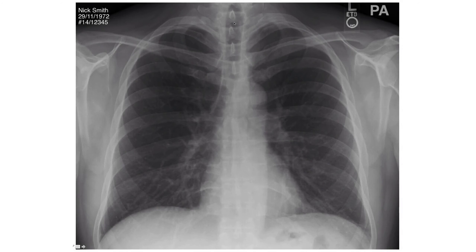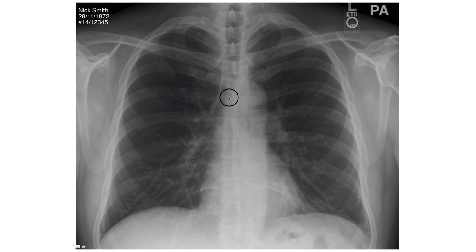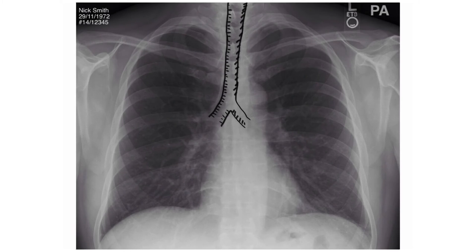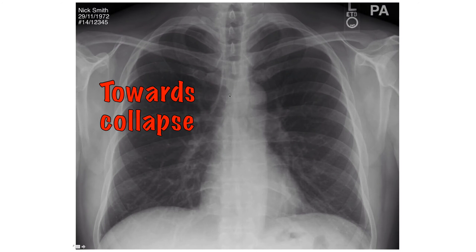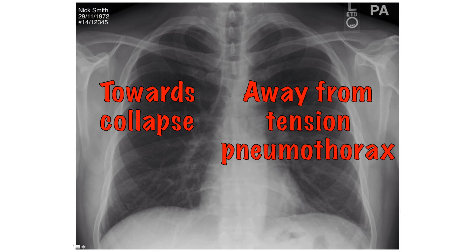Start with the trachea and work your way down. The trachea contains air so it is blacker than its surroundings. Check if it is centrally positioned or deviated to one side. The trachea can be pulled towards the side of collapse or pushed away from the side of a tension pneumothorax.